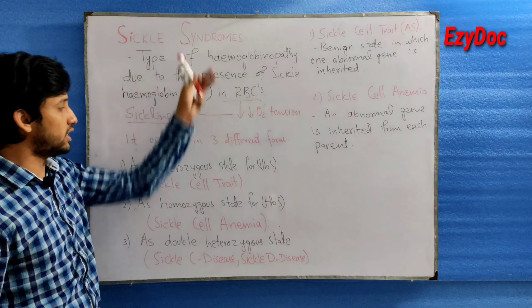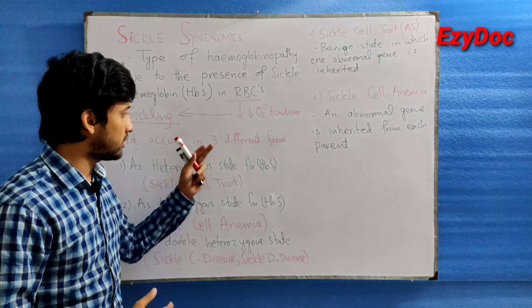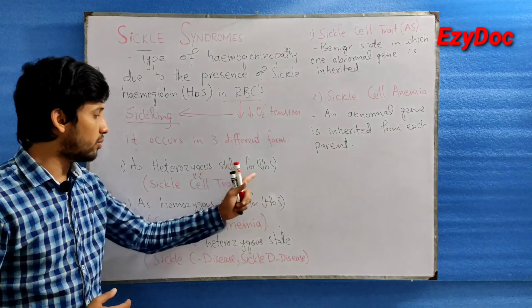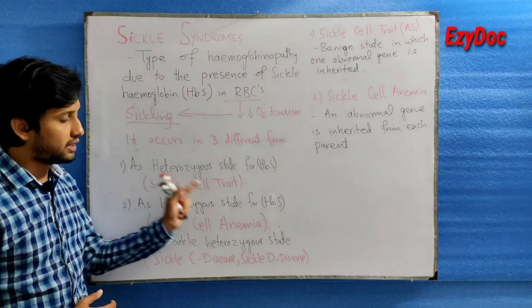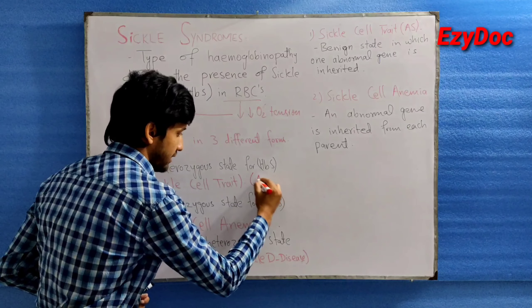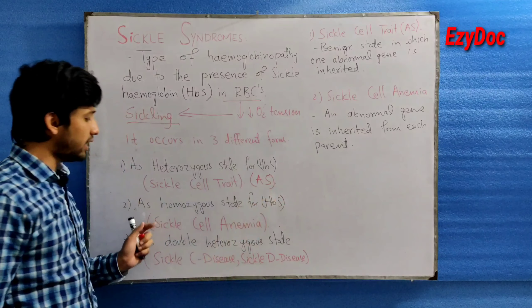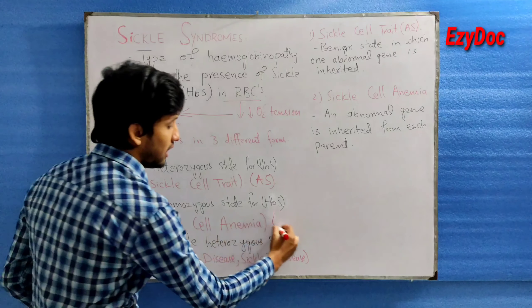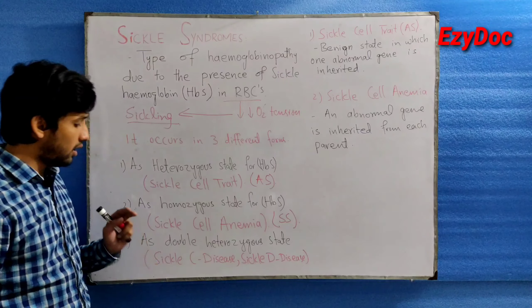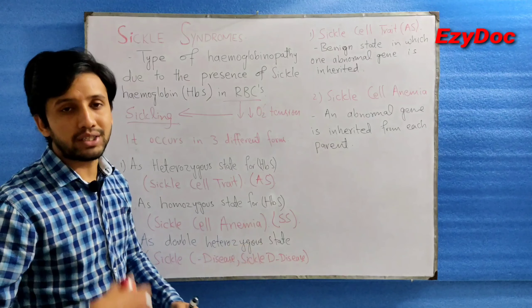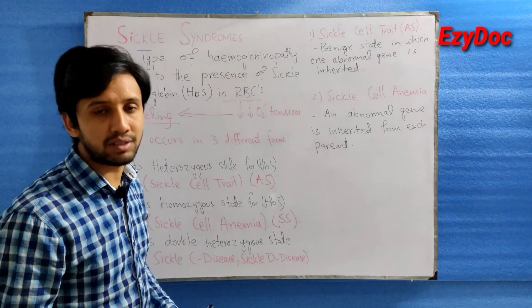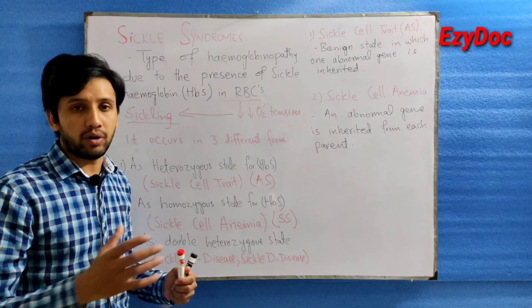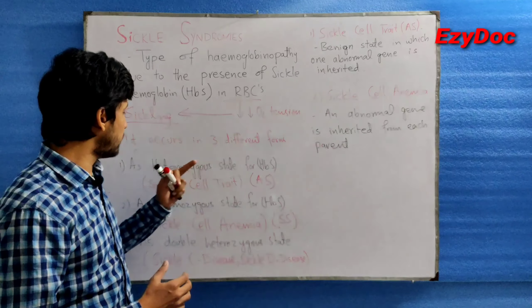The sickle syndrome can occur in three different forms. Number one is the heterozygous state for hemoglobin S (HbS), which we call sickle cell trait — denoted as AS. The second is the homozygous state for HbS, that is sickle cell anemia, denoted as SS. The third is the double heterozygous state, which can occur as sickle beta-thalassemia, sickle C disease, sickle D disease, or any other structural abnormality.